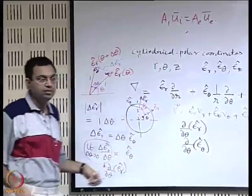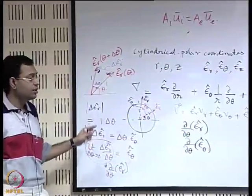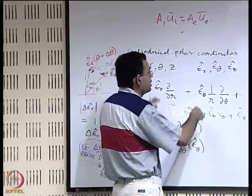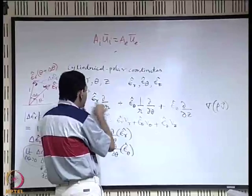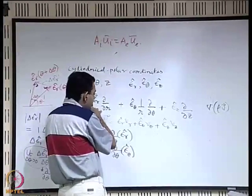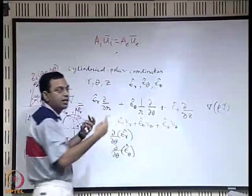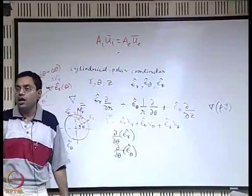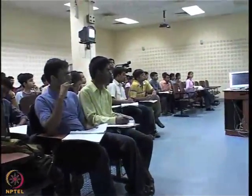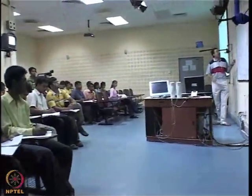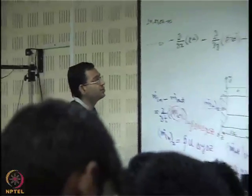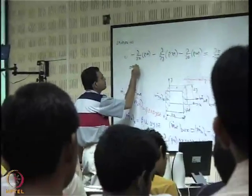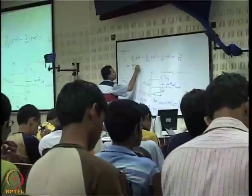Plugging these considerations into the del operator and performing the divergence operation in cylindrical polar coordinates will yield the continuity equation in the r-theta-z system. You should complete this exercise and verify your final expression against the form given in your textbook — this will confirm you have done it correctly.